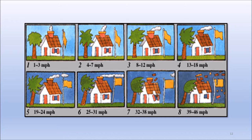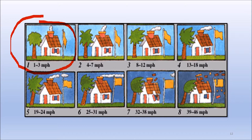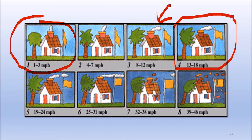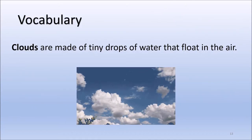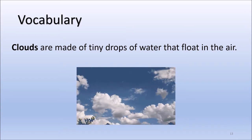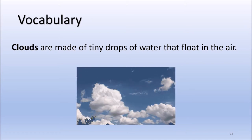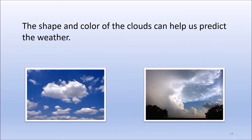If the flag, leaves, or trees are barely moving, we know there is very little wind. However, if the flag is moving a little bit, we know the wind is slightly stronger. When you look outside and see the flag flying and the trees are moving, you know the wind is a little bit stronger. Just like meteorologists, we can learn a lot about the weather by looking at the clouds. Clouds are made of tiny drops of water that float in the air. The shape and color of the clouds can help us predict the weather. Some clouds mean a sunny day, while others mean it is going to rain or storm.